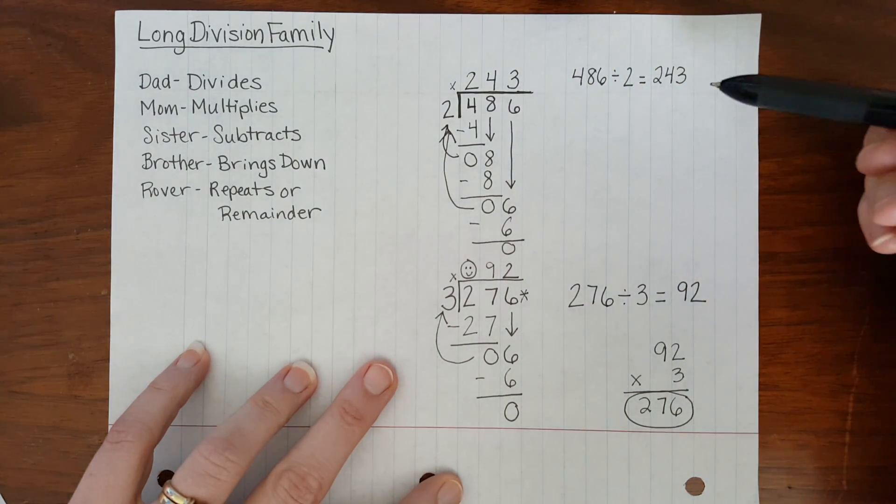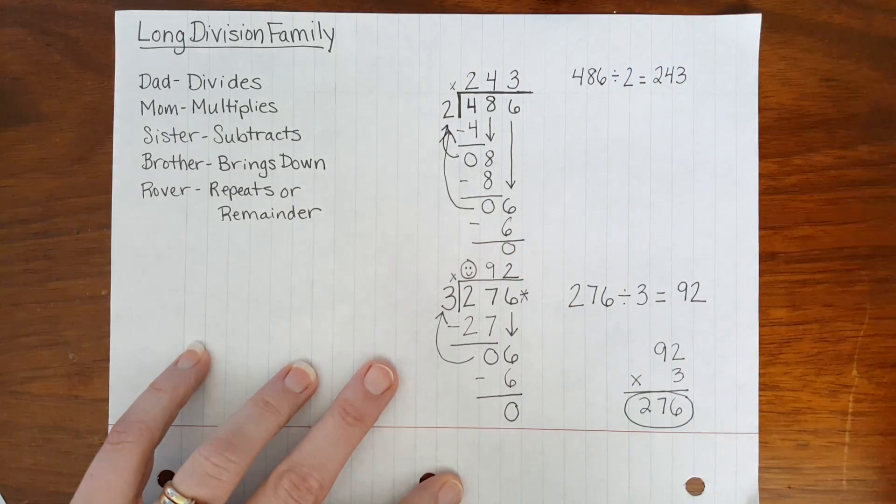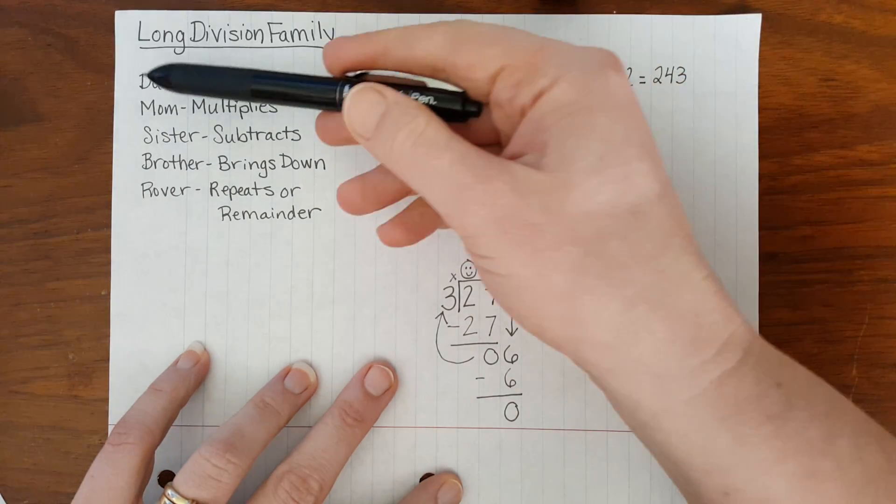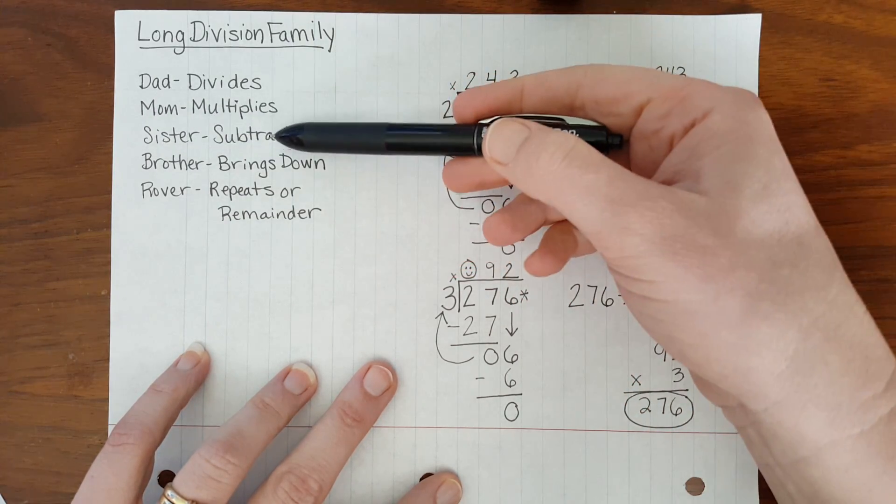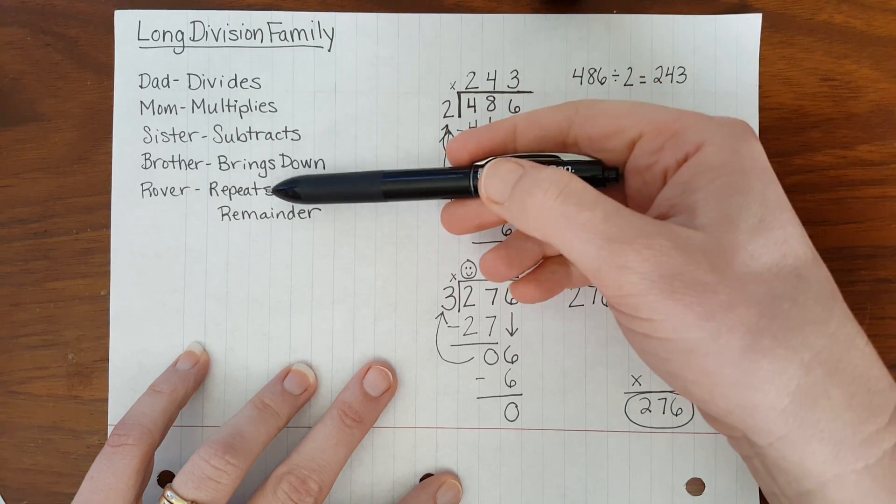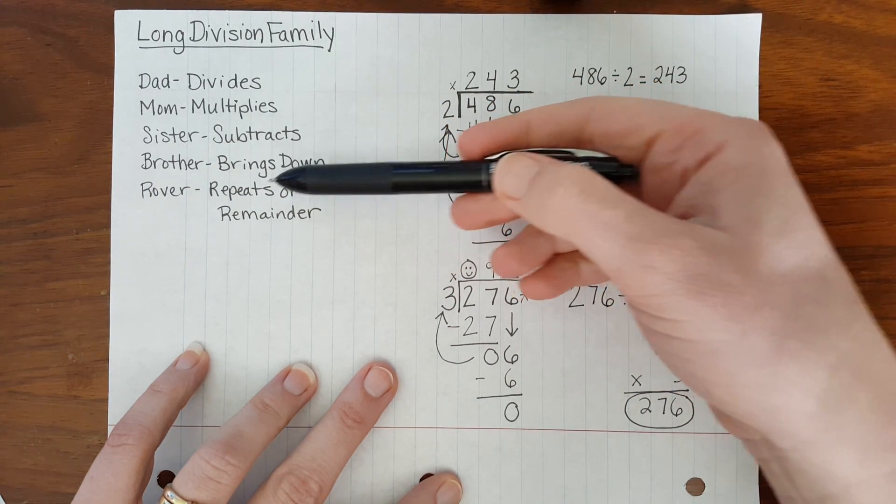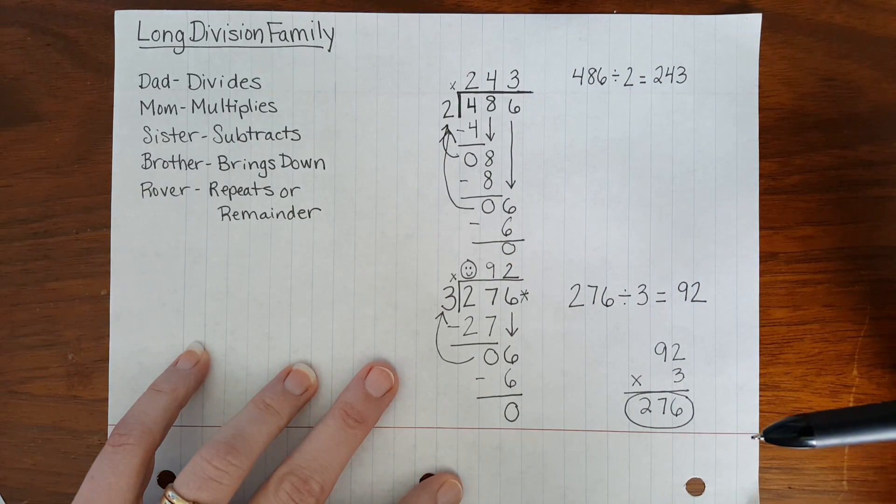These are simple steps to follow when you're solving a long division problem. Remember, Dad divides, Mom multiplies, Sister subtracts, Brother brings down, and Rover either repeats those steps or helps put a remainder in our quotient.